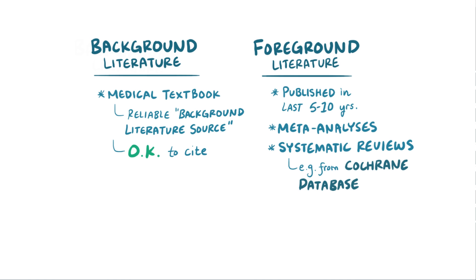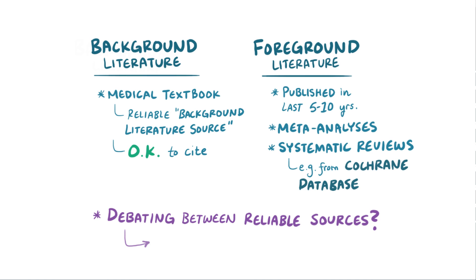If you're enrolled at a university, it's worth finding out what resources your library has available to you. Lastly, when debating between two or more reliable citations, always include the one that's more open access, so more Wikipedia readers can read the original citation for more in-depth information if they want to.